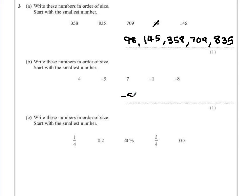So negative 8 is the smallest, then negative 5, then negative 1. As we get closer to 0, it's getting bigger. After that, we're left with two positive numbers, so then that goes 4 and 7.